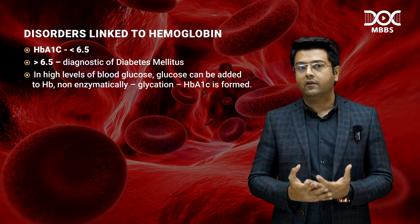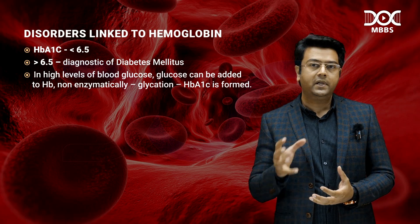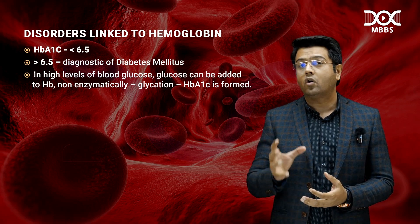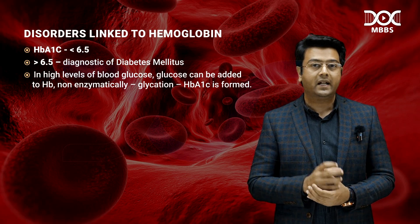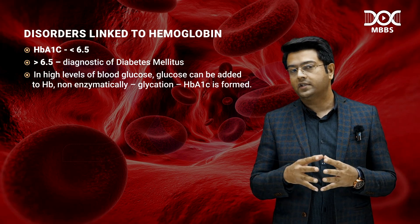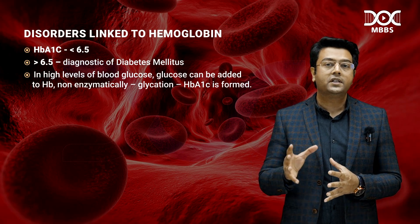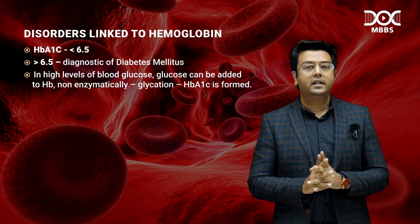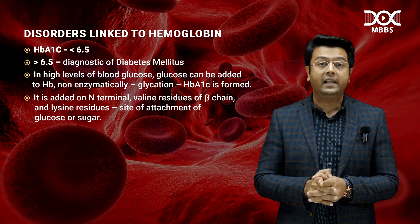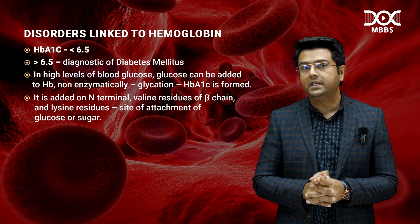In people with high levels of blood glucose, glucose can be added to hemoglobin non-enzymatically — a process called glycation. This is how HbA1C is formed. It is added specifically to the N-terminal valine residues of the beta chain.